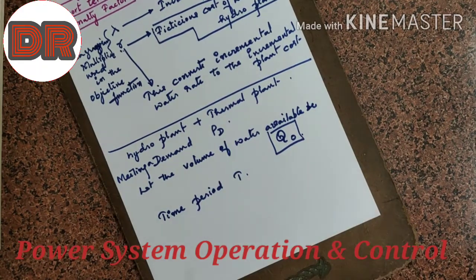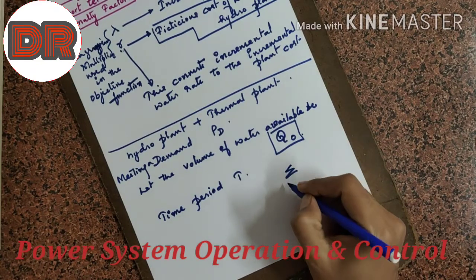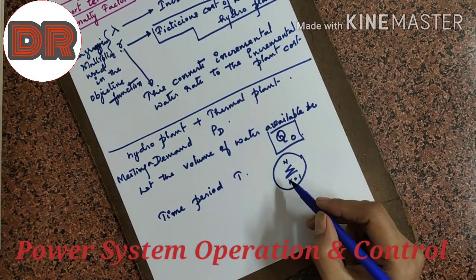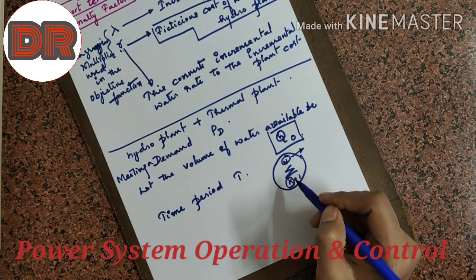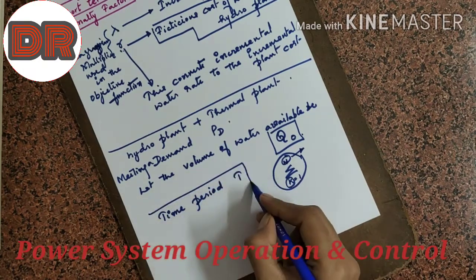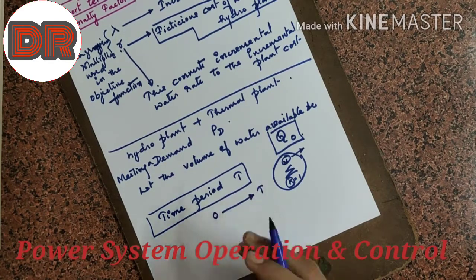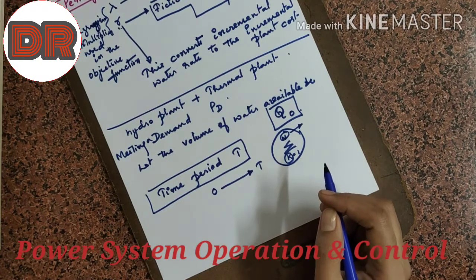Since we do not have discretization or different intervals of time, we cannot use the summation symbol for the objective function. In the previous algorithm, we took K = 1 to N, meaning time was split into N intervals denoted by K. Here, we take the entire time period as T, from 0 to T, without splitting into intervals. So the objective function writing will be a little different.